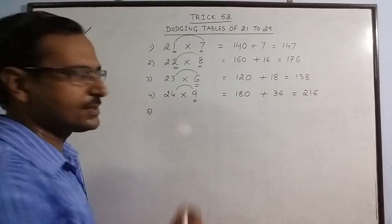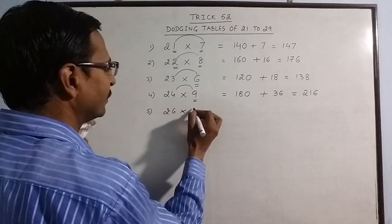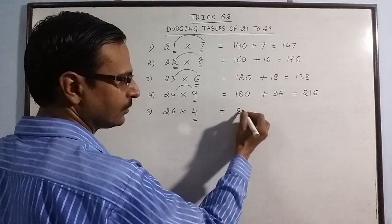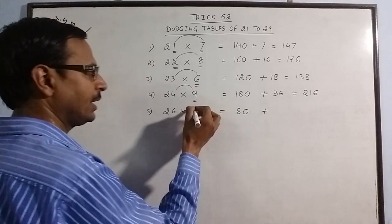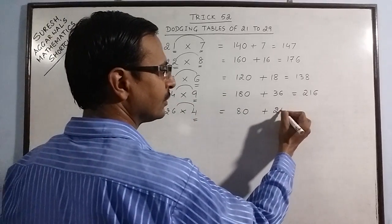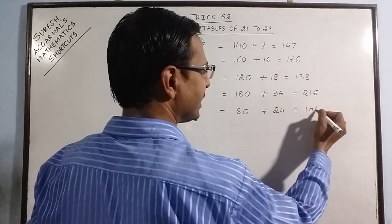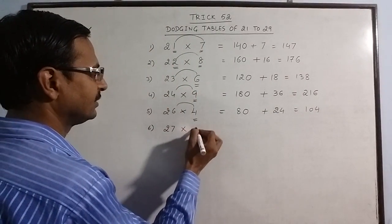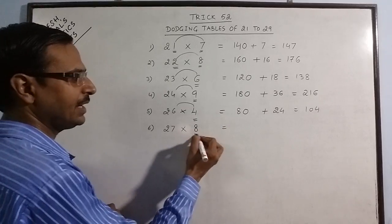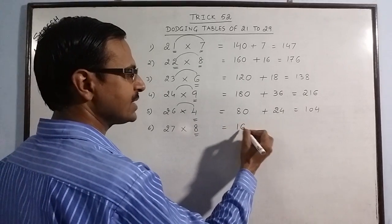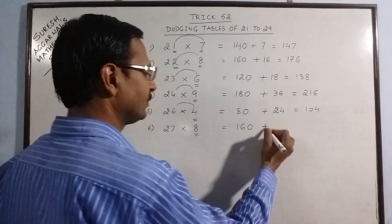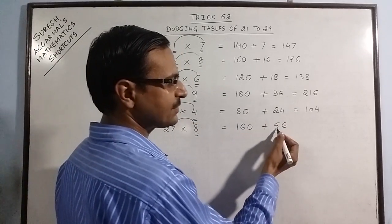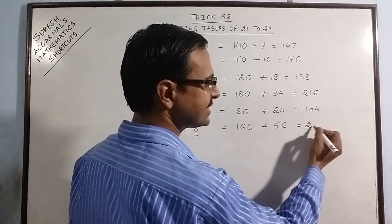Another example: say 26×4. Now double of 4 is 8, put a 0, and 4×6 is 24, so 104 is the answer. 27×8: 8×2 is 16, put a 0, 8×7 is 56. 160 plus 50 is 210, so 216 is the product.